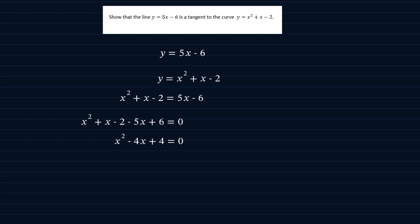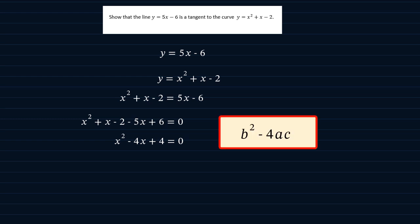Now, since we now have this quadratic equation formed by combining the two equations, that is the equation of the line and the equation of the curve, we can test using the discriminant b squared minus 4ac to see the number of roots that we get.